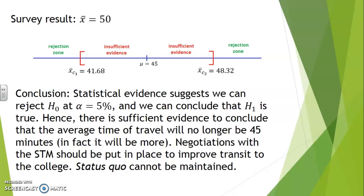So in other words, statistical evidence suggests that we can reject H0 in this case at an alpha level 5%. And we can conclude that H1 is in fact true. That is, that the true mean is no longer 45 minutes. Hence, there is sufficient evidence to conclude that the average time of travel will no longer be 45 minutes. Our data suggests that it will in fact be more than 45. Negotiations with the STM should be put in place to improve transit to the college. The status quo cannot be maintained.